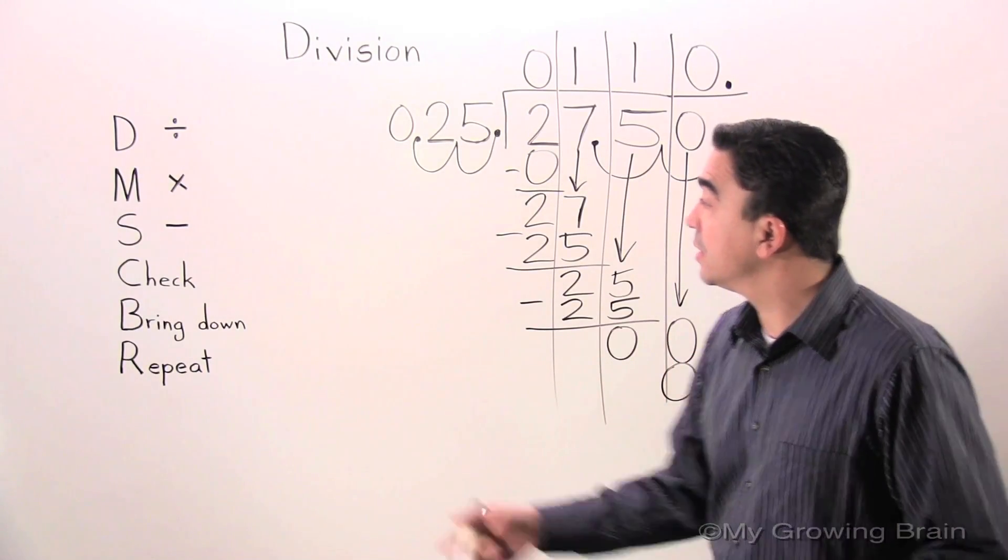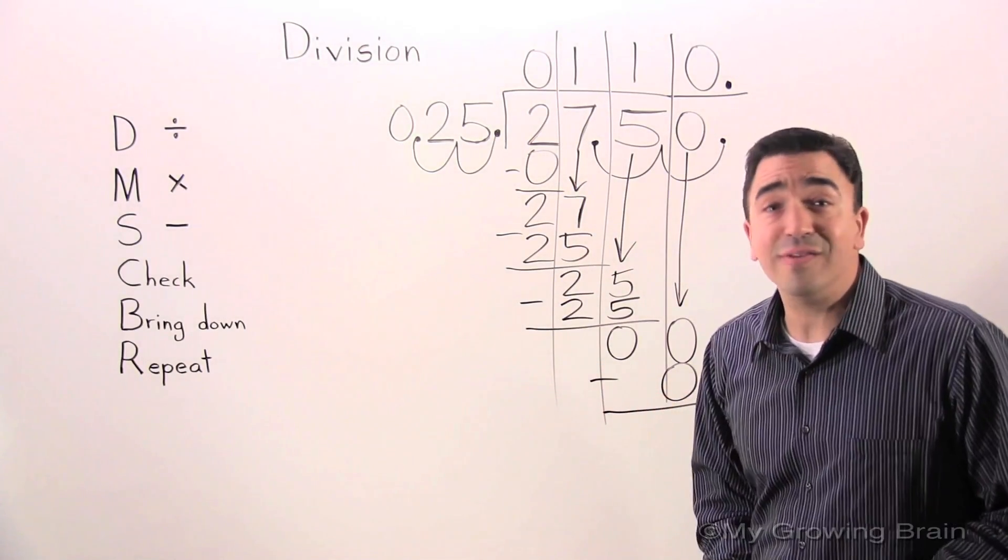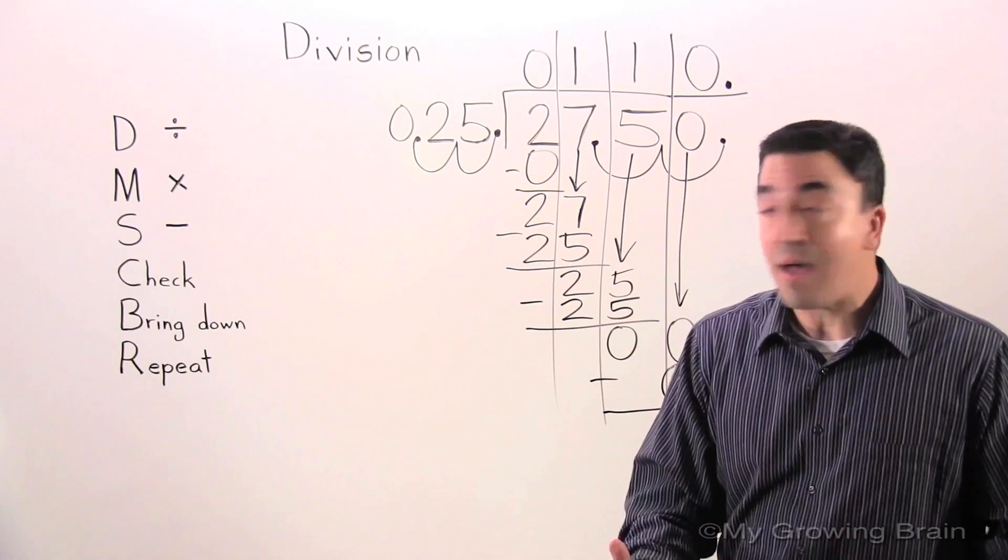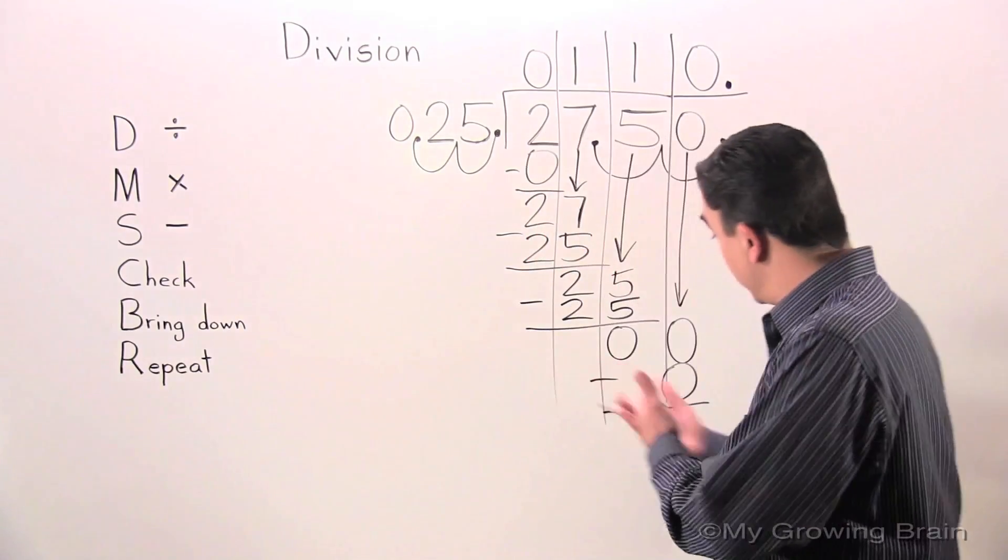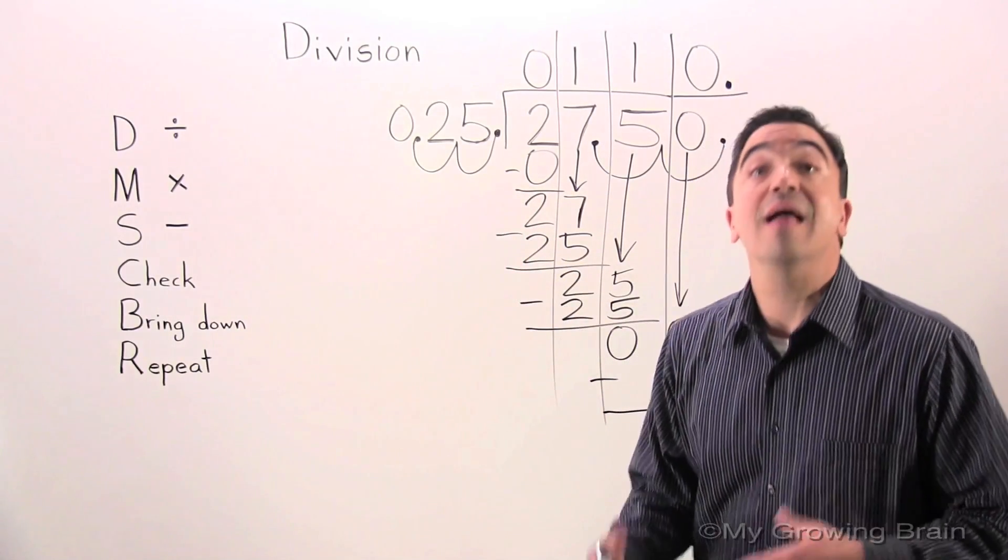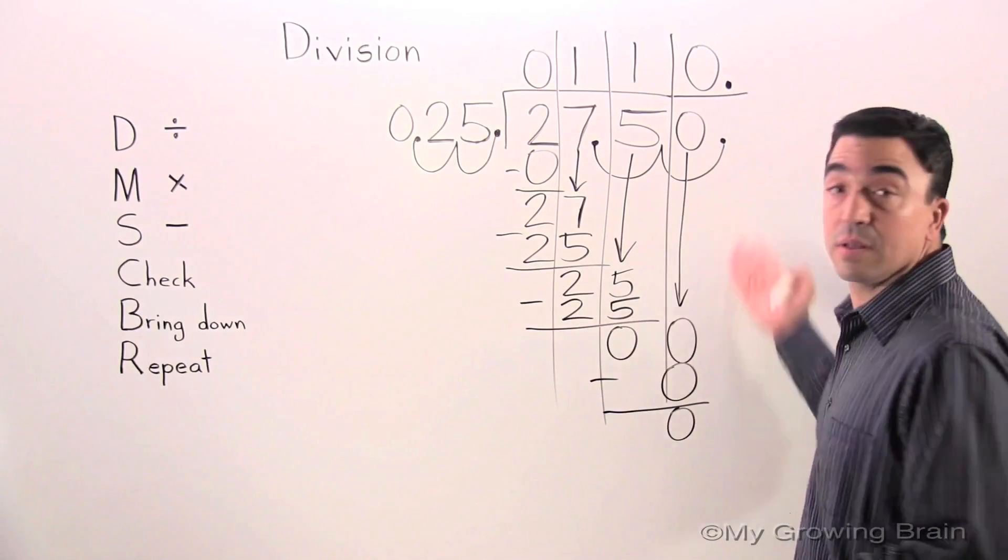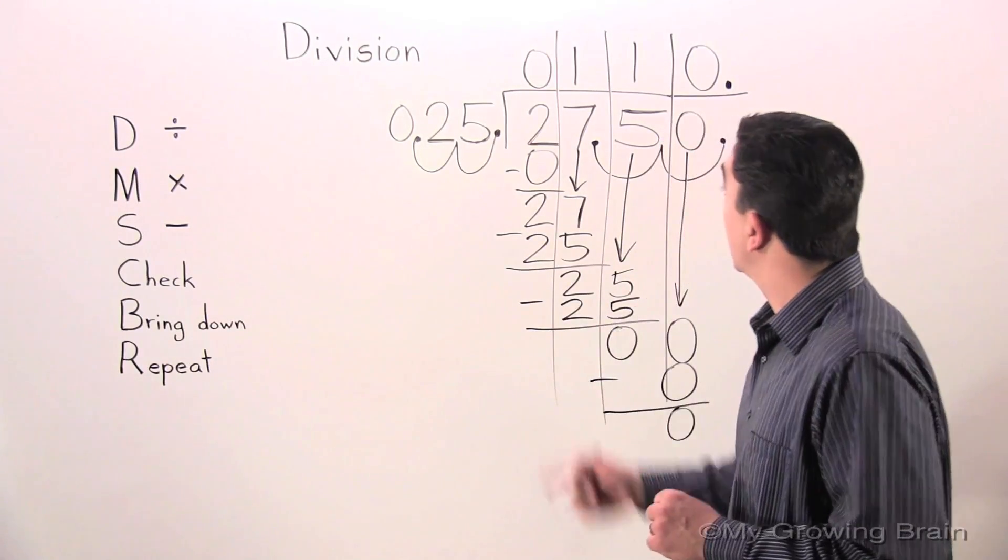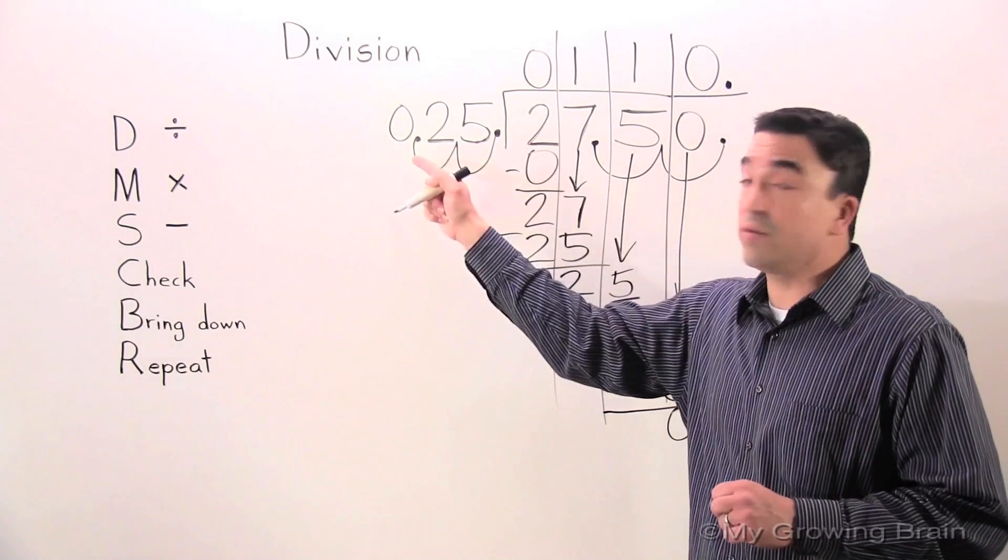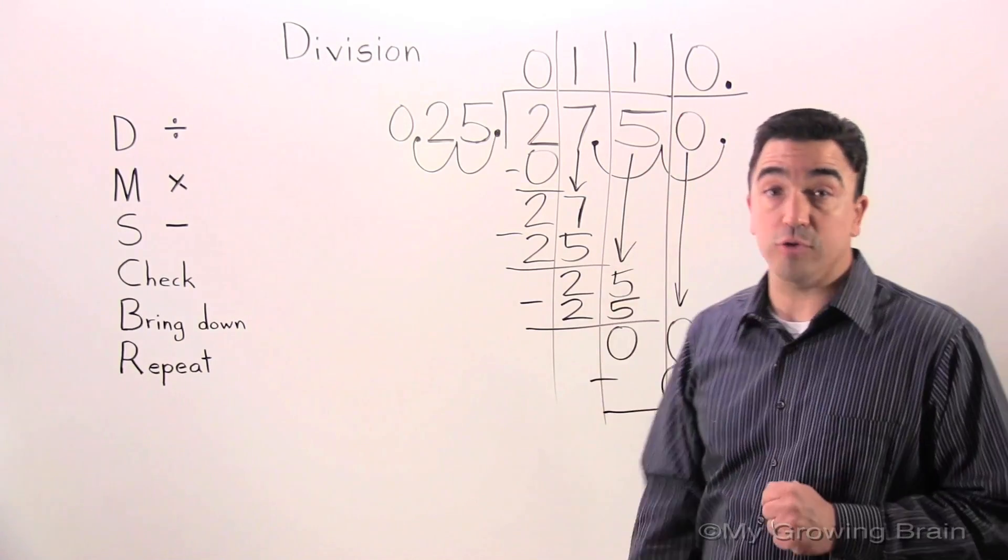Next step. Subtract. 0 minus 0 equals 0. Next step. Check. 0 is less than 25. Keep on going. Next step. Bring down. Nothing there. Therefore, 27.5 divided by 0.25 gives us a quotient of 110.